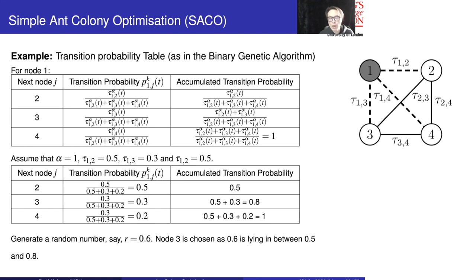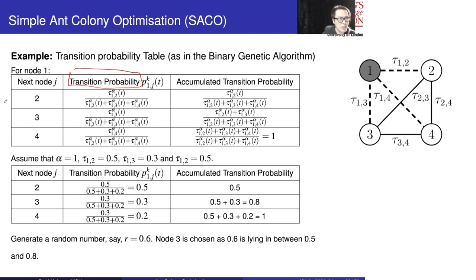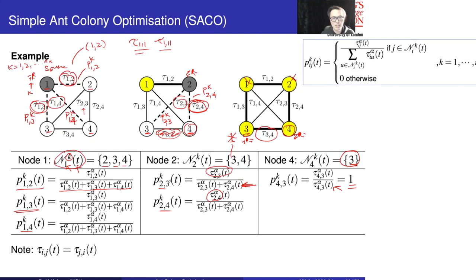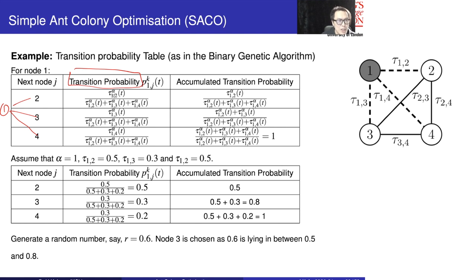Now I have mentioned how to construct the transition probability. This table gives you a numerical example of how we use this to determine which node the ant is going to visit. This transition probability assumes we are sitting at node 1, going to node 2, node 3, or node 4. I have copied down the expressions here, and now we are going to compute the accumulated transition probability — the same as what we have done with cost-weighting probability in the binary genetic algorithm.